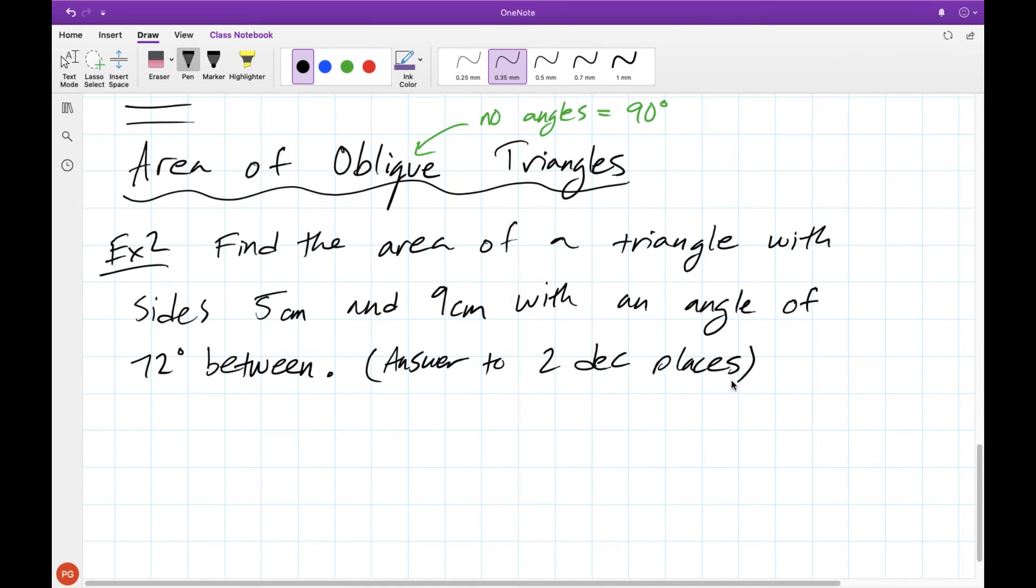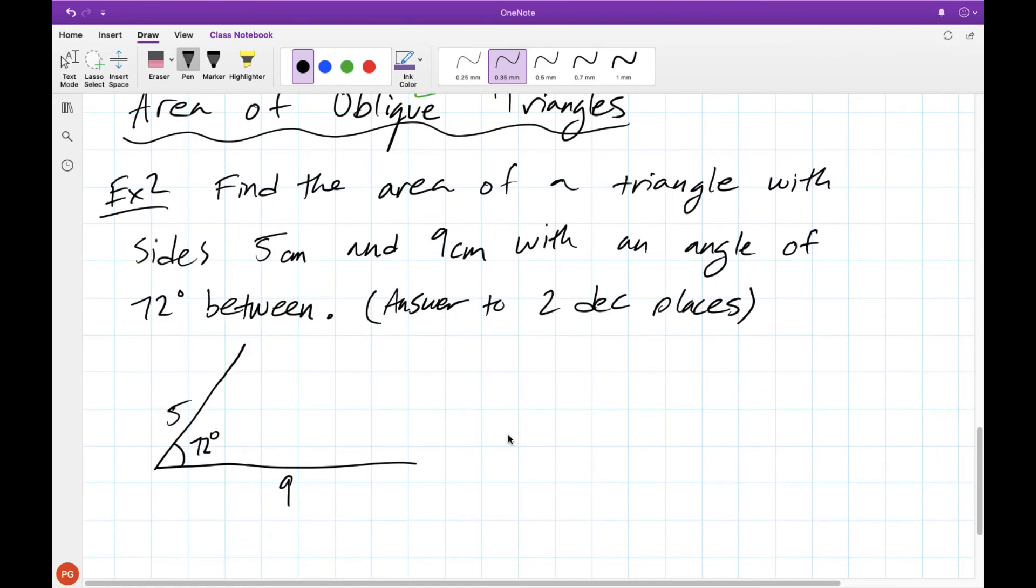First thing we want to do just like our last example is to draw a picture. So here's a sketch of the information that we have. Now we don't know what this side here is going to be and we don't know any of the other angles. But in this case we actually don't need to know any of the other sides or angles, because all we're interested in solving for is the area, which is equal to 1/2 times the base times the height. Now the way I have it drawn here, 9 centimeters would be my base. You could have also drawn it so that 5 centimeters was on the bottom and 9 centimeters was off on the angle.